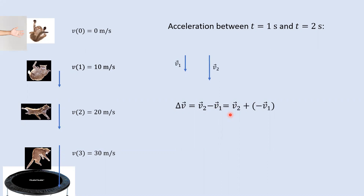We've already established that subtracting a vector is equivalent to adding the negative of that vector. By rewriting delta v as an addition, we can make a picture using vector addition. When adding vectors, place them tip to tail. Take negative v1, flip this vector around to switch its direction, then put it tip to tail with v2. Here's the tip of v2 next to the tail of negative v1 — I have placed them tip to tail.